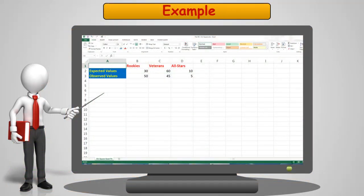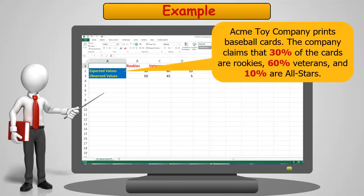Normally, I would do this sample in KNIME for this class. But, in this case, I'm going to do it in Excel because it'll be easier for you to follow along since each computation in KNIME would require several nodes. Let's go back to my example and assume that the Acme Toy Company prints baseball cards and they claim it's 30% rookies, 60% veterans, and 10% all-stars.